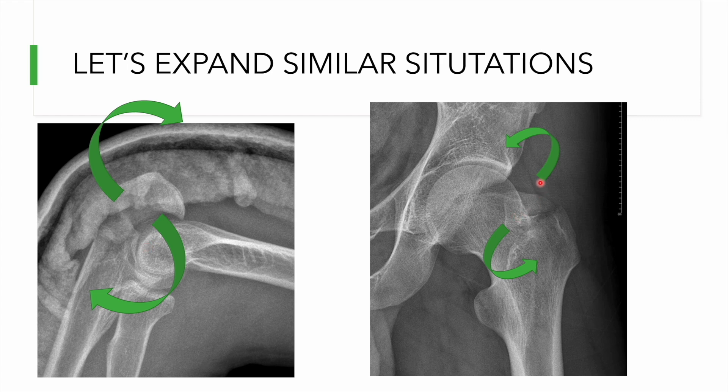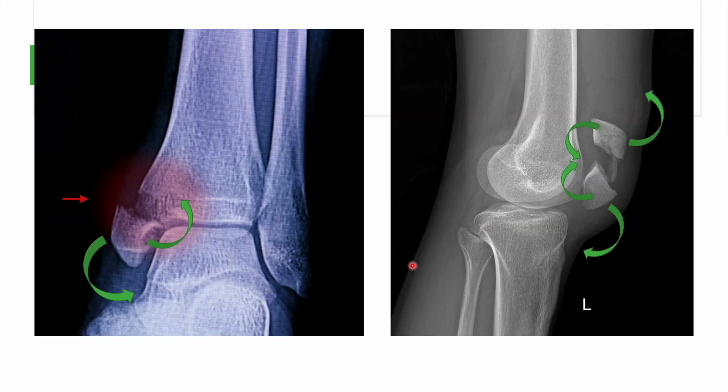In greater trochanter avulsion fractures, the outer part rotates proximally while the inner part gets tilted downward — creating opposite forces on the two different surfaces.